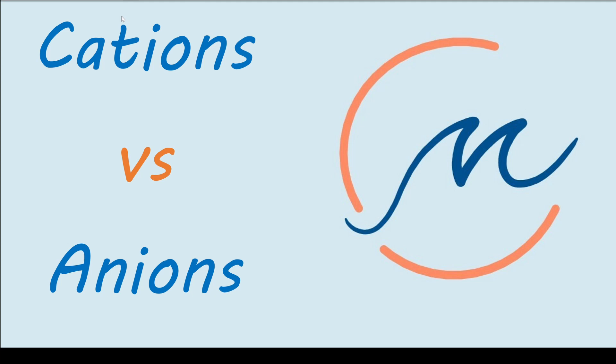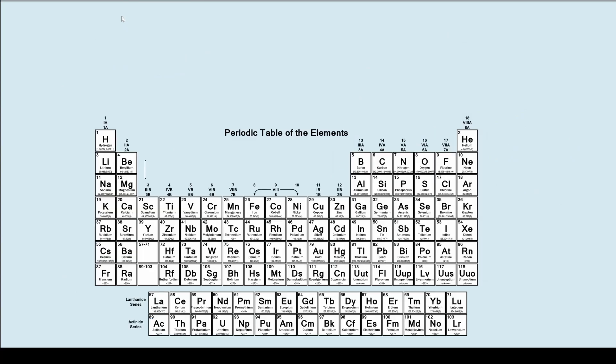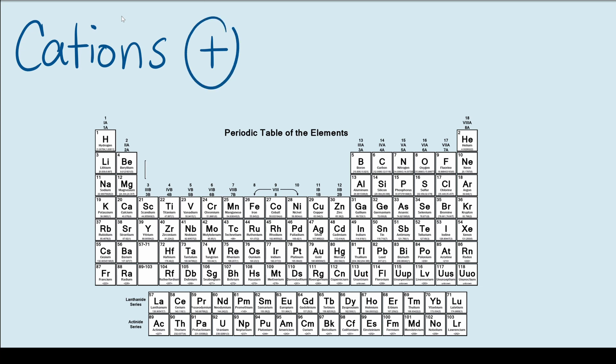So let me start with cations. Cations are basically positively charged ions. From my previous video, ions are simply charged atoms. Cations are specific distinctions that help us identify the charge on the ion — in this case it's positive.